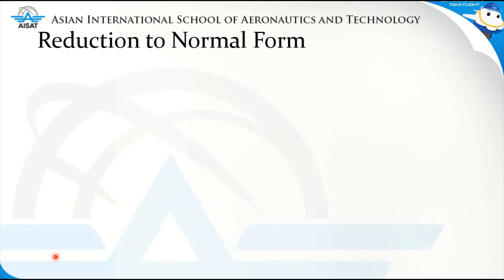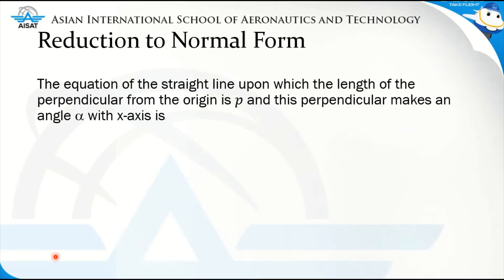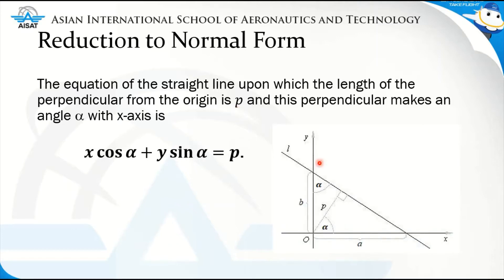We commonly express the equation of the line in normal form if we wish to determine the distance, or the nearest distance, of the line from the origin. The equation of the straight line upon which the length of the perpendicular from the origin is p, and this perpendicular makes an angle with the x-axis, is expressed as x cos alpha plus y sine alpha is equal to p.